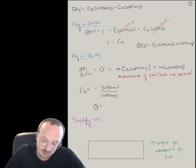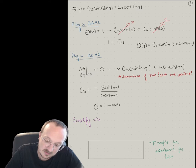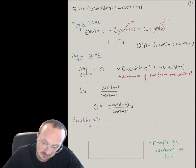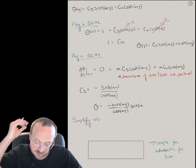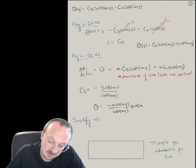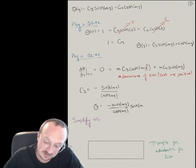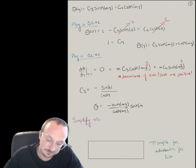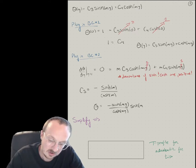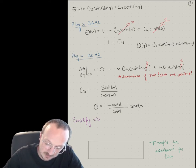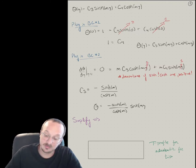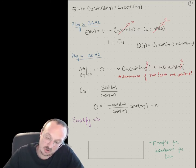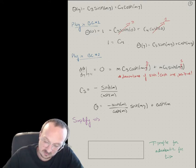Now we can plug in to our equation. C3 is negative sinh(M) / cosh(M), so theta equals negative sinh(M)/cosh(M) times sinh(mZ), plus cosh(mZ). So if we have sinh(M) and cosh(M), the temperature profile becomes: theta(Z) = -[sinh(M)/cosh(M)]·sinh(mZ) + cosh(mZ). This is our temperature profile.